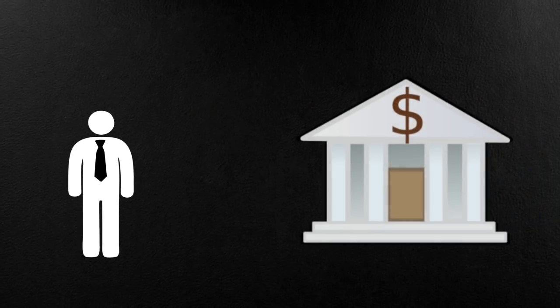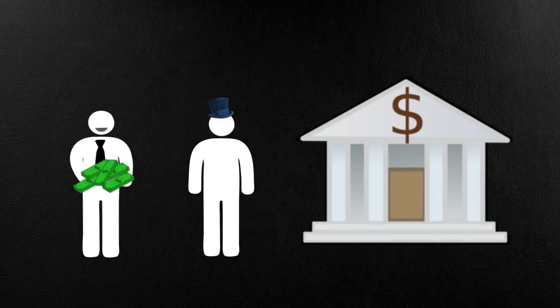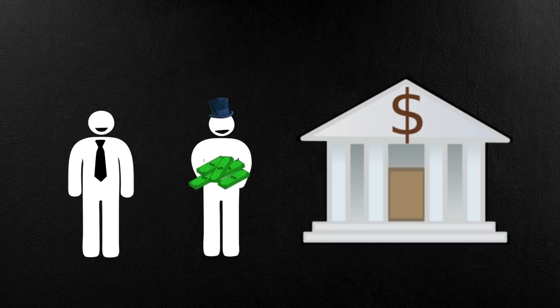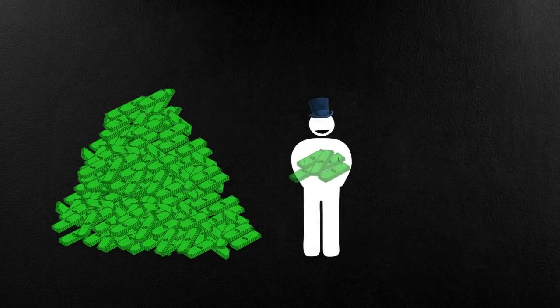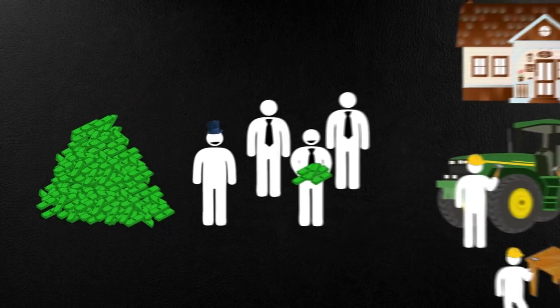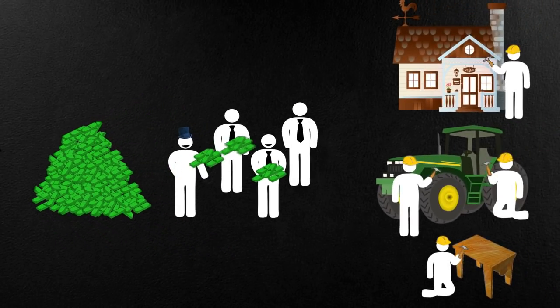And get this. The more goods that are being produced, the more savings that become available. As this pile of savings grows, even larger loans become available to even more entrepreneurs. This makes an economy grow exponentially.